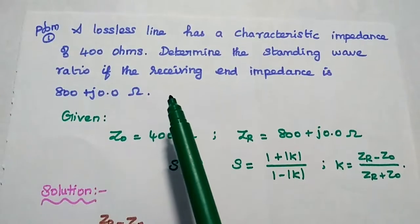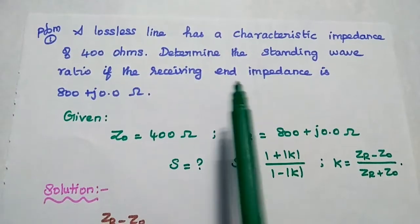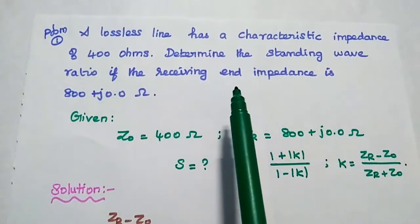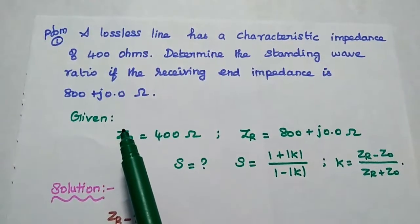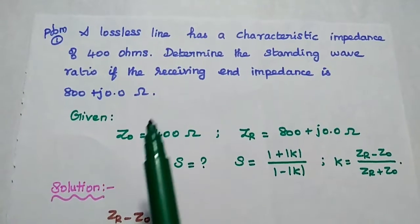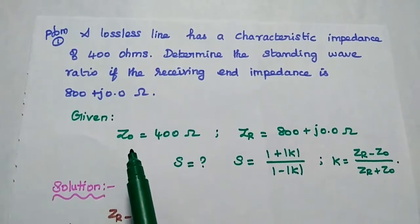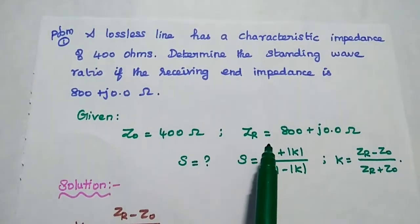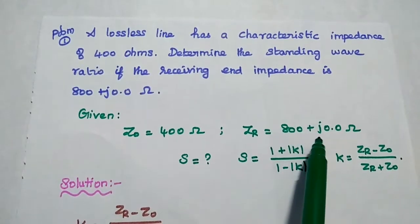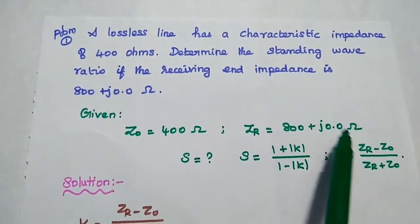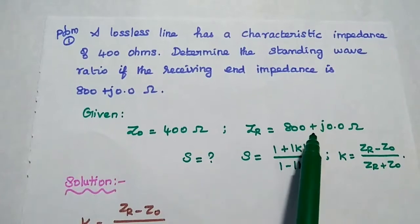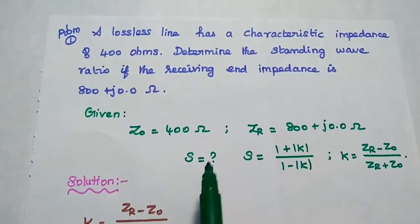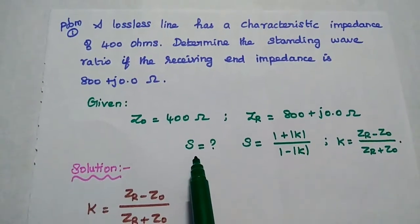First problem: A lossless line has a characteristic impedance of 400 ohms. Determine the standing wave ratio if the receiving end impedance is 800 plus J0.0 ohm. The given data: Z0 is equal to 400 ohm, and ZR is equal to 800 plus J0.0 ohm — only the real part is given, so the imaginary part is 0. We have to find the standing wave ratio.